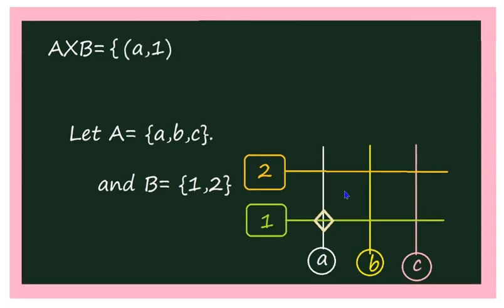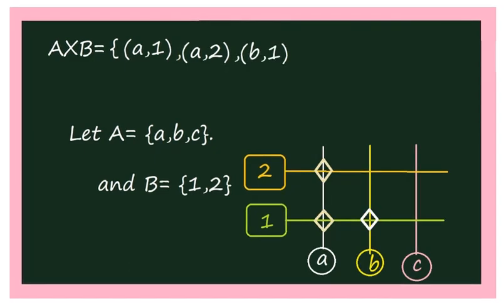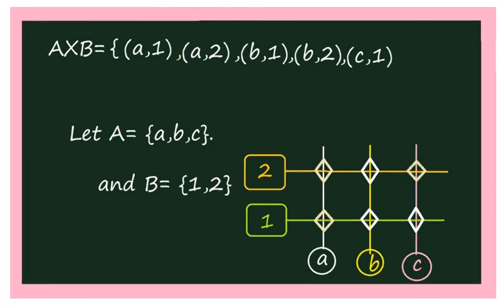Similarly, there are many other junctions. The next junction is (a, 2), then (b, 1), (b, 2), (c, 1), and (c, 2). These are all the junctions, and this is itself the cross product of two sets. We have taken set A as the first set, meaning persons from A, B, and C go to the offices — and these junctions are the cross product A cross B.